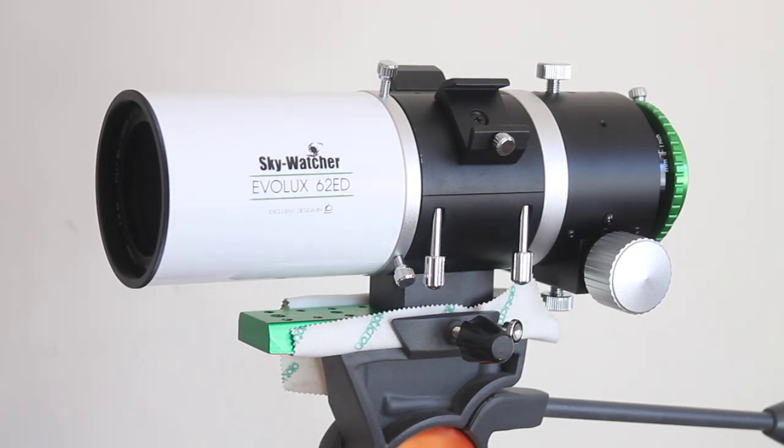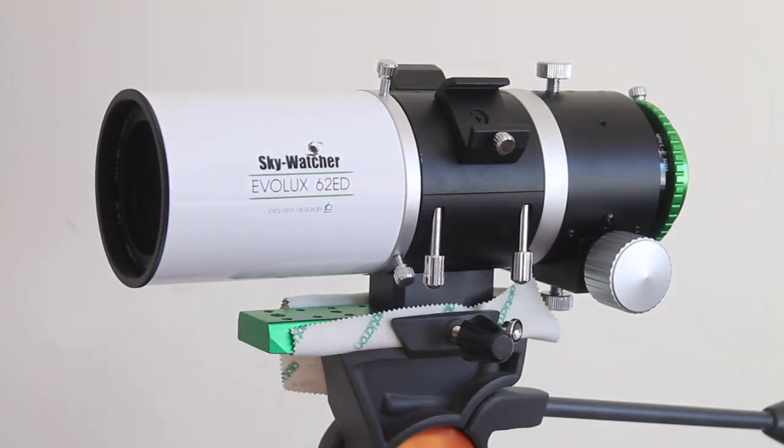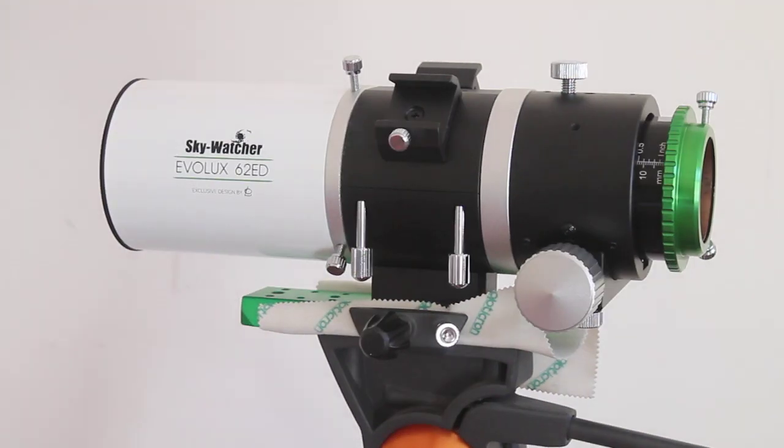First thing I noticed when I looked at the specification was the price, retail of £359, which makes it more expensive or around about the same price as the EVOSTAR 72ED. But this one apparently has much better construction and is an upgrade in optical quality compared to the EVOSTAR.